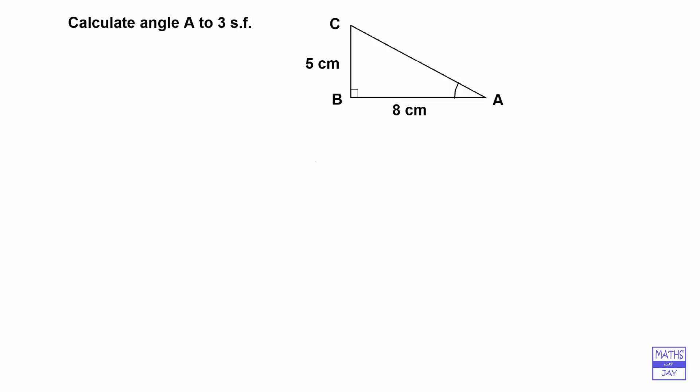So you know that sine is opposite over hypotenuse, cosine is adjacent over hypotenuse, and tangent is opposite over adjacent.